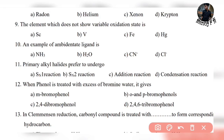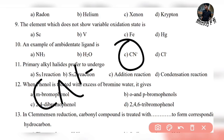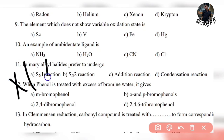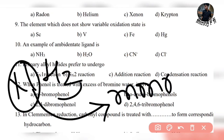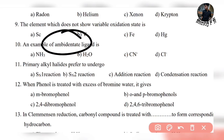Question 10: it is an example of an ambidentate ligand. A ligand basically donates a pair of electrons. The answer is CN⁻ — C and N. Both C and N each have a lone pair of electrons, giving it the capability to donate from either end. That is why CN⁻ is called an ambidentate ligand — unlike NH3, which is a monodentate ligand.